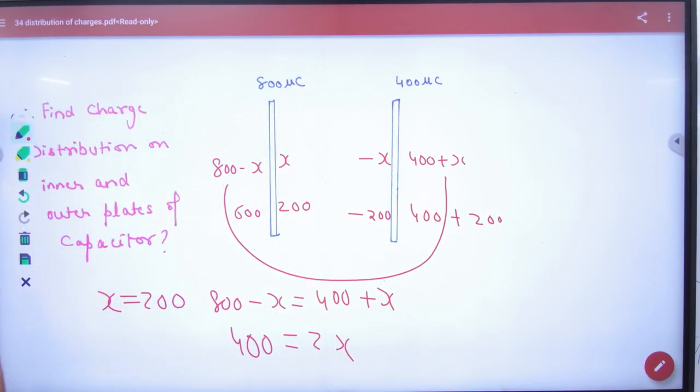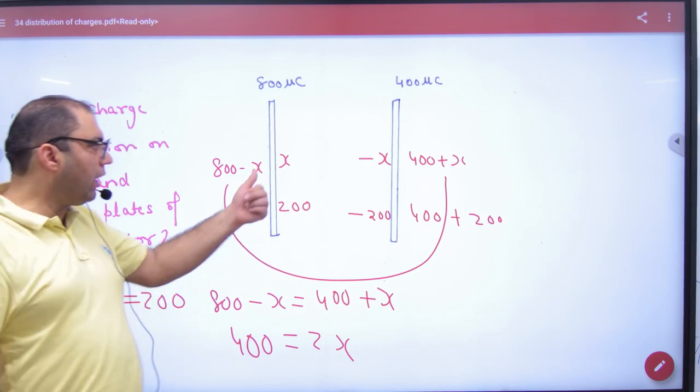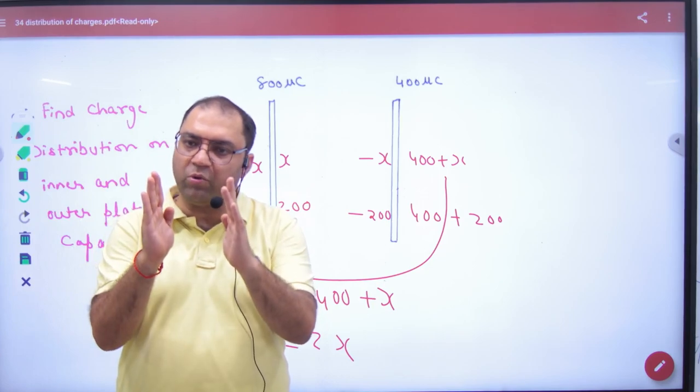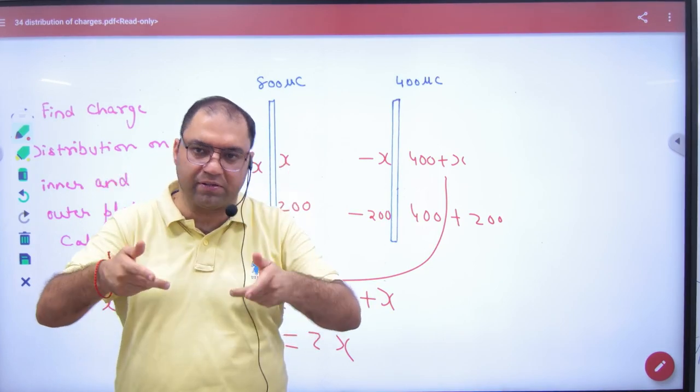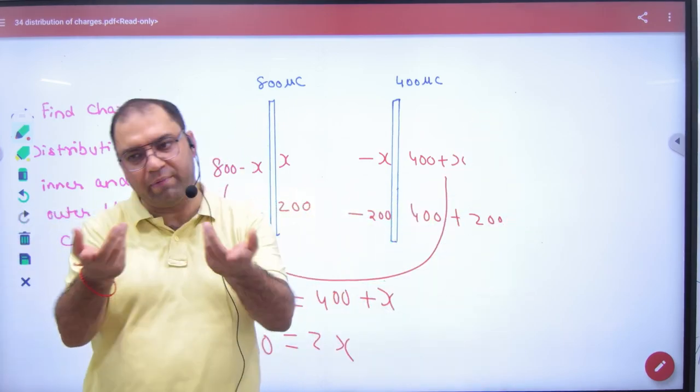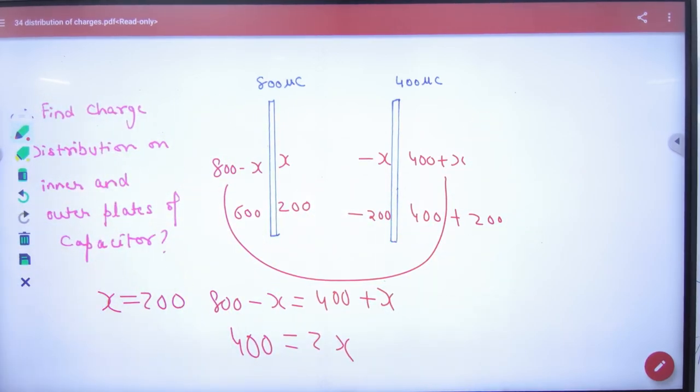After this problem, how do you have to do it? You take minus x, x. Look at the plate of the capacitor, opposite sides have equal and opposite charge. It will adjust itself. The charge of the corners is equal.